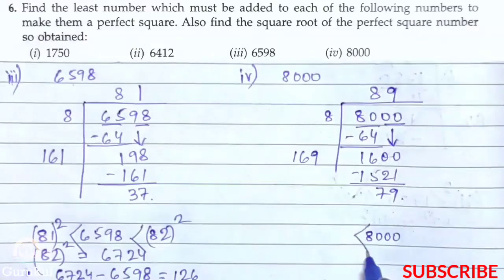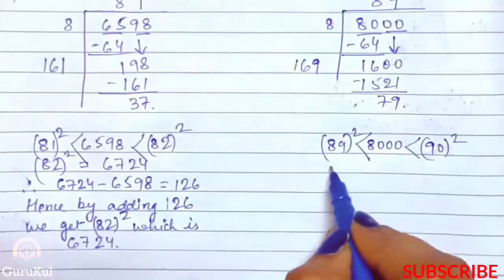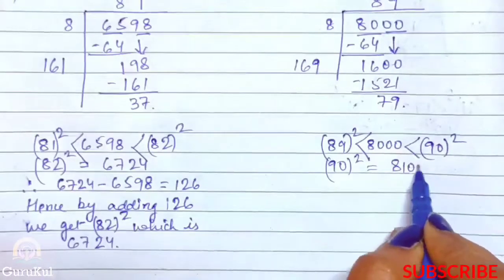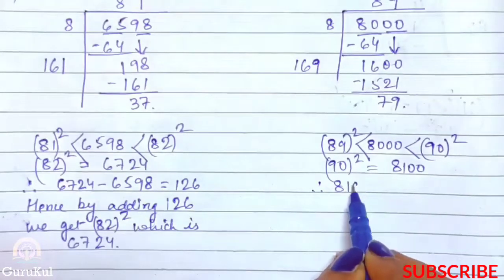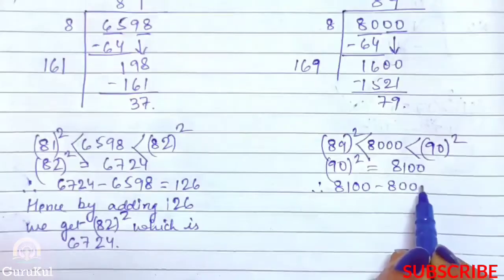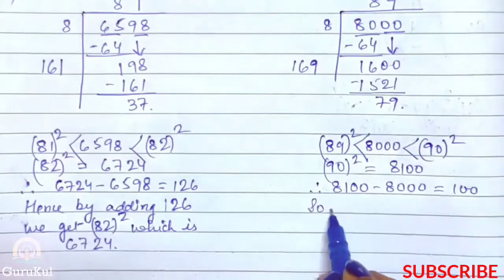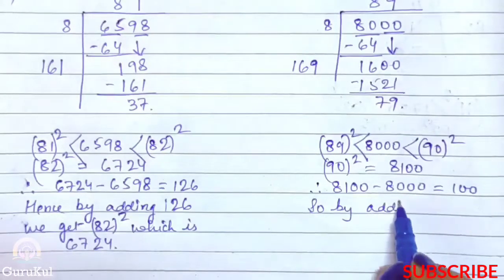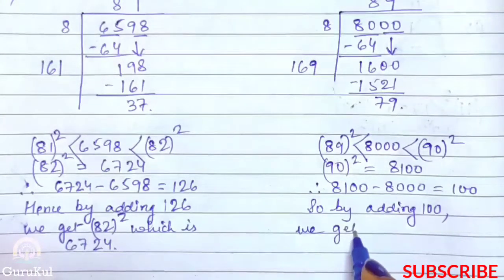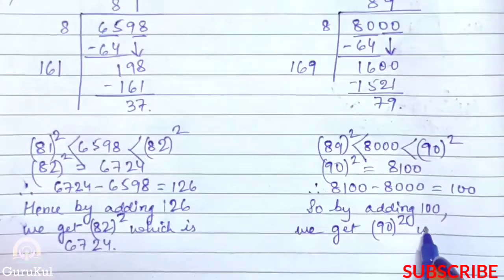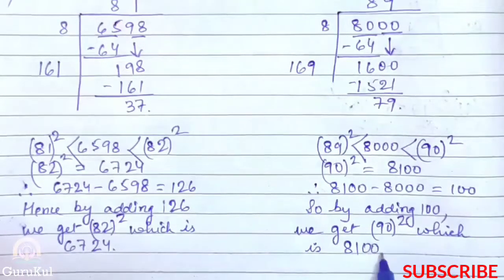So 8000 is more than 89 square but less than 90 square and 90 square kya hai? That is 8100. Now we have to subtract these two. Therefore, 8100 minus 8000 is equal to 100. So by adding 100, we get 90 square, which is 8100.